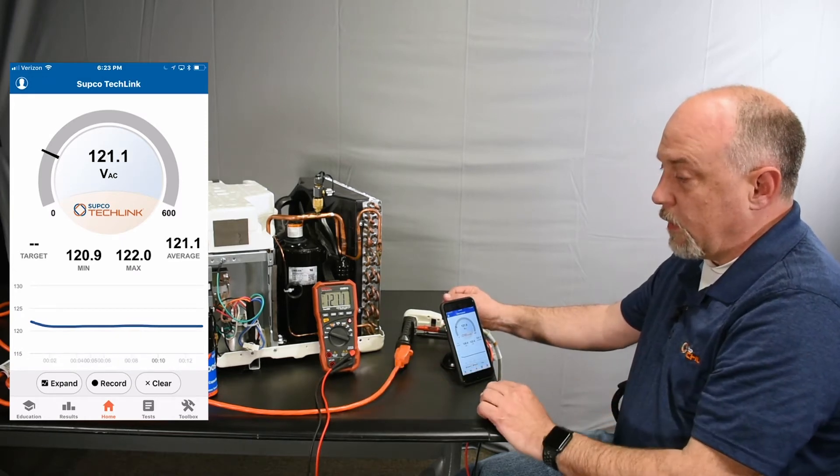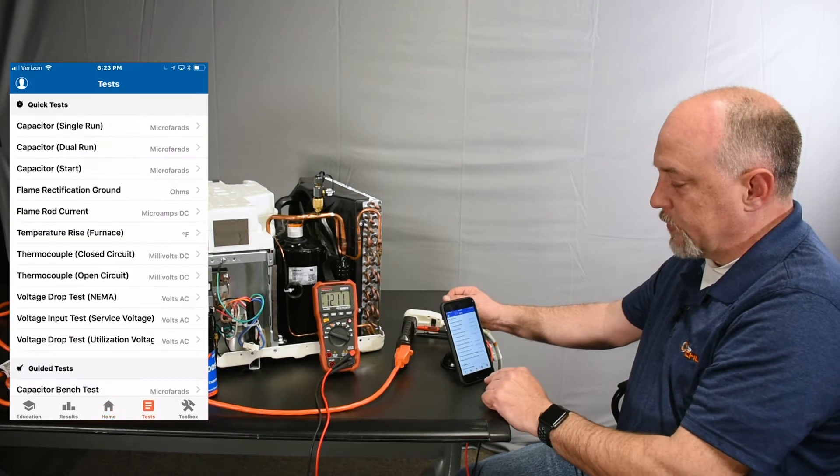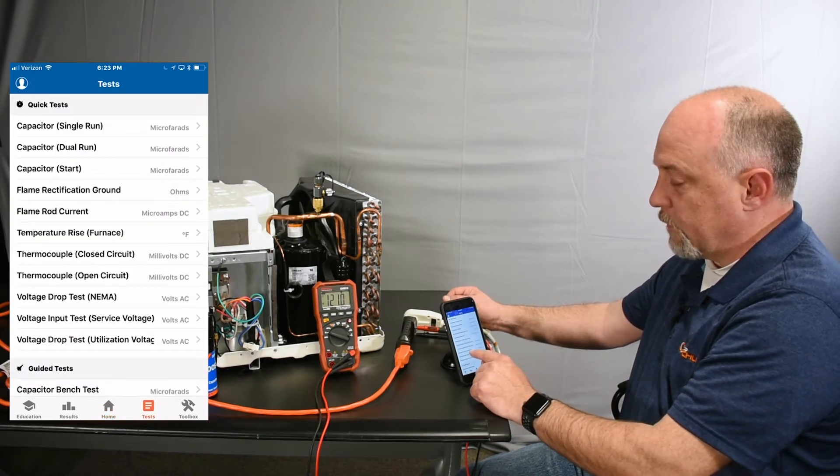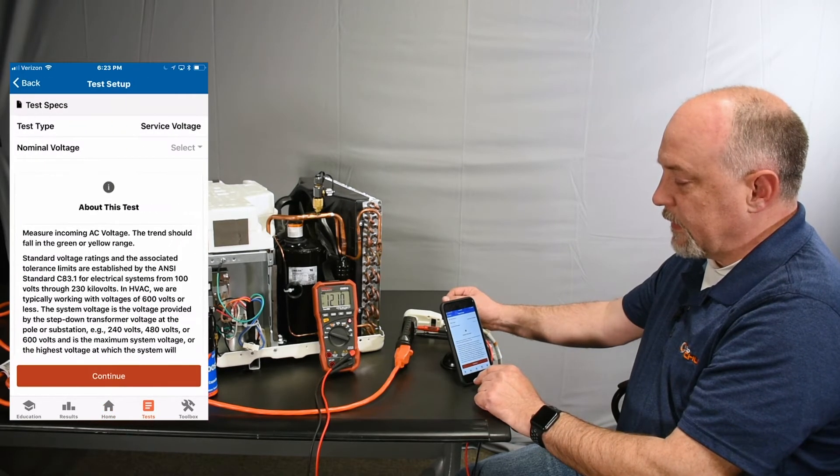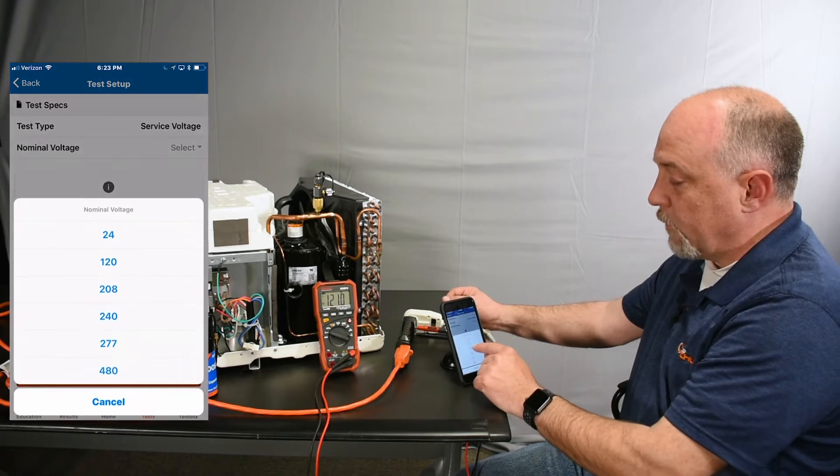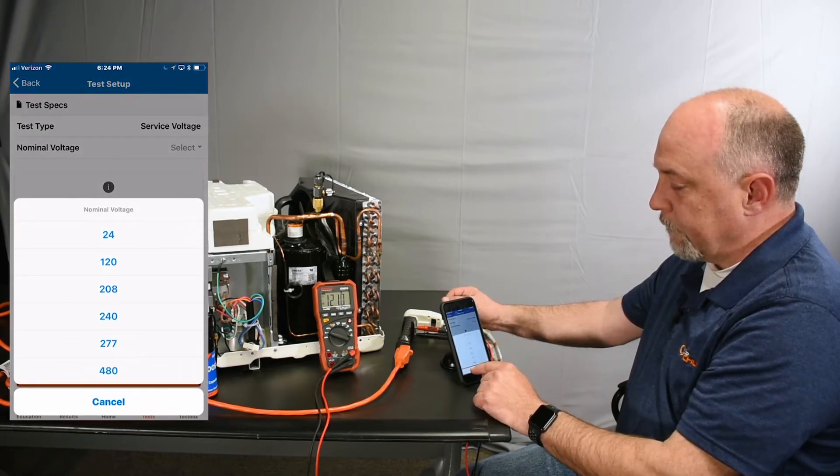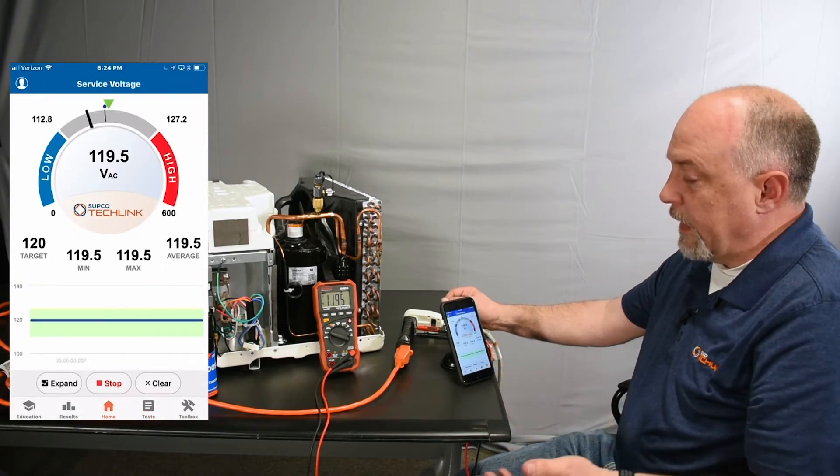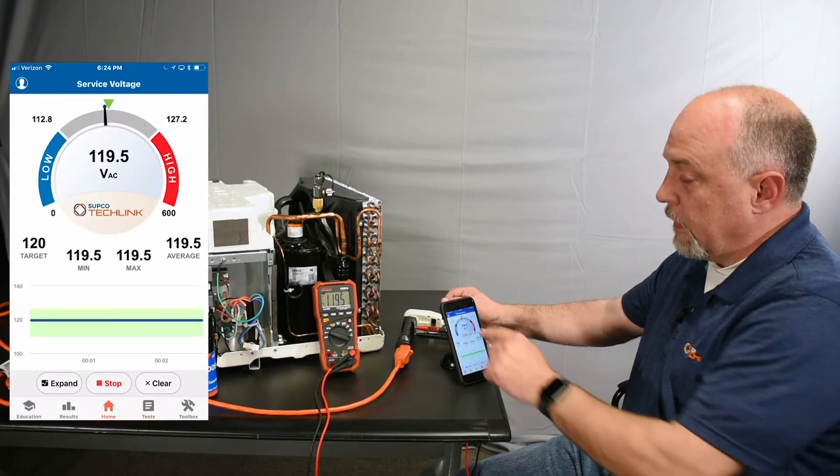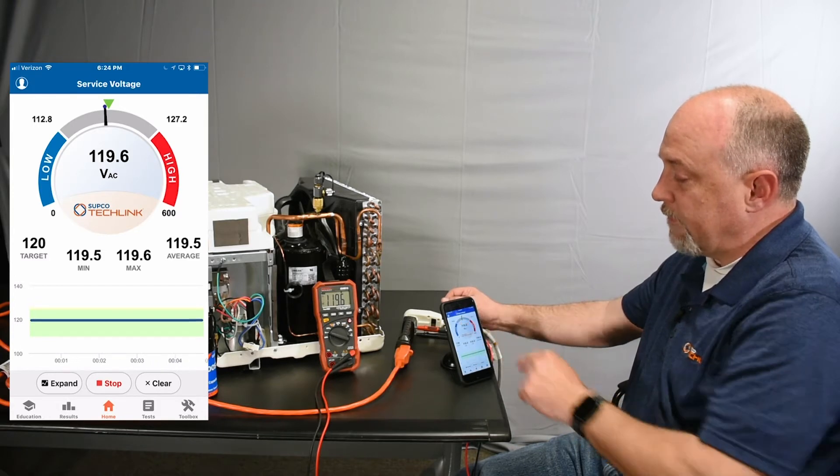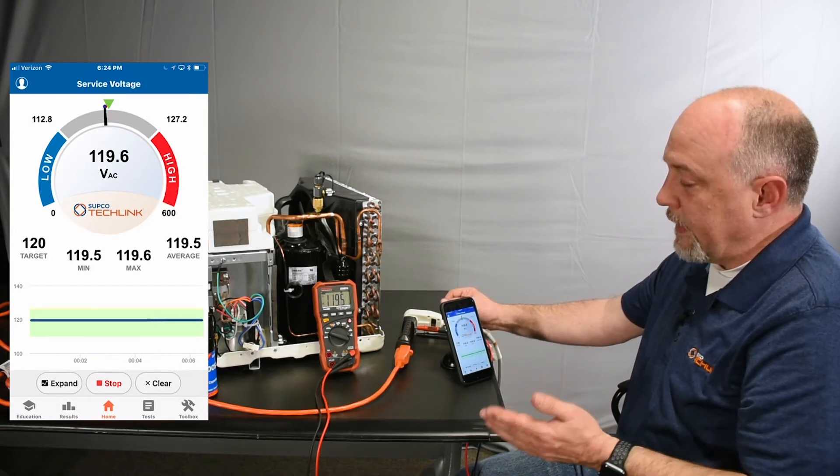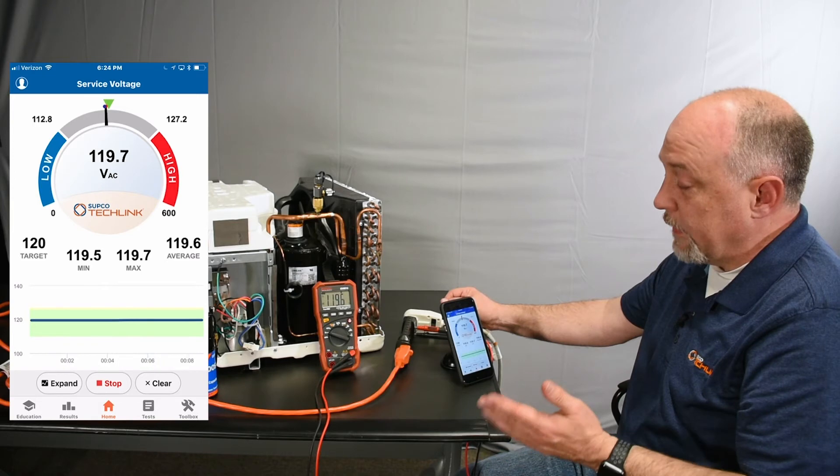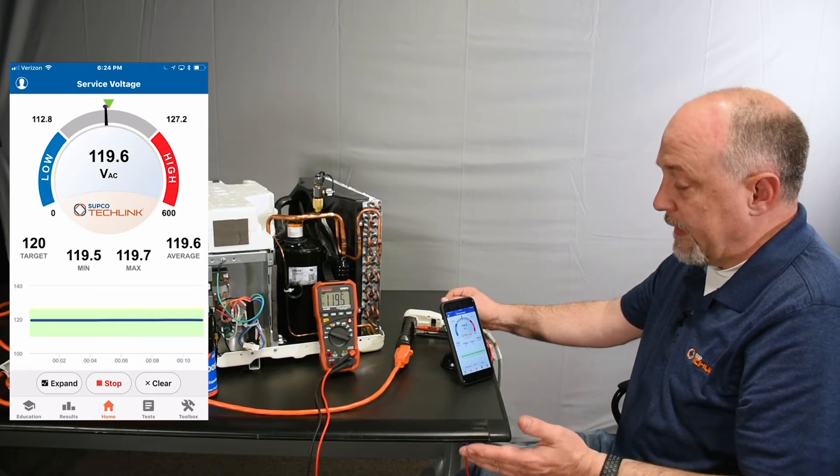Right away you can see I have 121 volts and I'm going to start a service voltage test. We select service voltage, select nominal voltage which is 120, and hit continue. It tells us the high and low range: 112.8 to 127.2. We're right at 119.5, so we're right in the center where we should be and everything looks great.